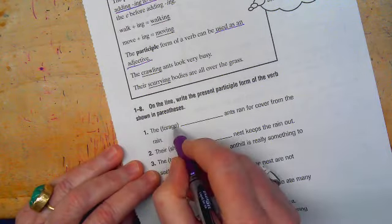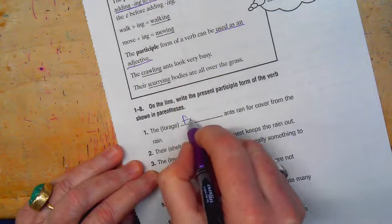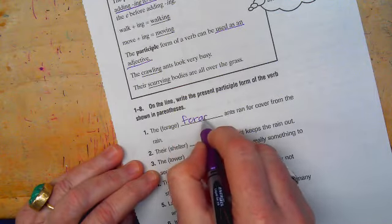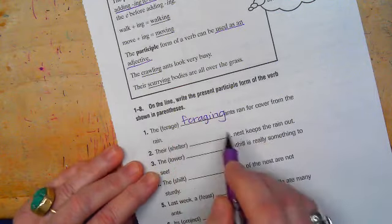So for example, the forage, this is going to become foraging. Foraging, we drop the E. The foraging ants ran for cover from the rain.